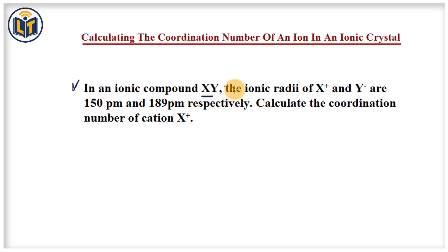The problem says that in an ionic compound XY, the ionic radii of cation X+ and anion Y- are given as 150 pm and 189 pm respectively. The question asks to calculate the coordination number of cation, means we have to find out the coordination number of X+ ion.